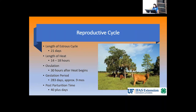Fertility is important to get the female to breed for the first time and to carry the calf all the way through gestation. Birth of the calf is approximately 283 days or nine months. The length of the estrus cycle is 21 days, and the window of time for the cow or heifer to become pregnant is 14 to 18 hours, referred to as the length of heat. Ovulation occurs 30 hours after heat begins, when the egg is released from the ovary.